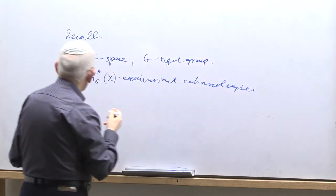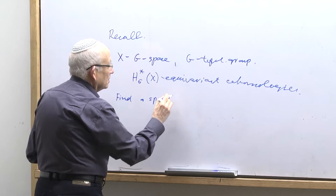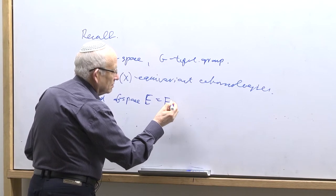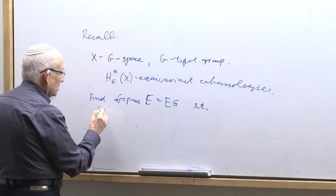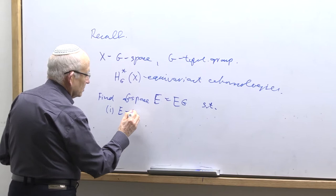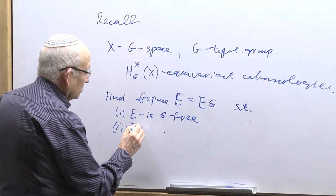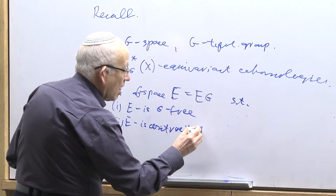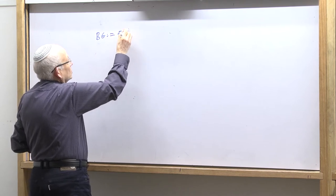This is the standard construction which I want to describe. We should find a space EG — a G-space — such that first, E is a free G-space, and second, E is contractible. After this, we define BG. My definition is EG quotient by G.